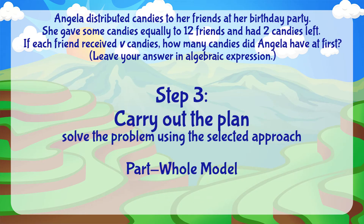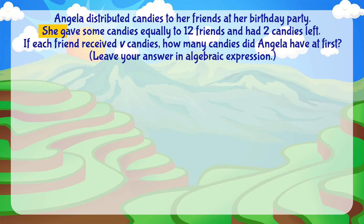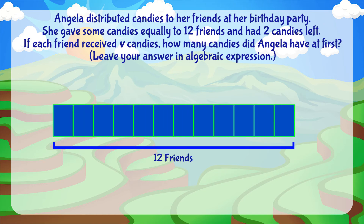Step No. 3: Carry Out the Plan — Solve the Problem Using Our Selected Approach. The Part-Whole Model: Angela gave the 12 friends the same amount of candies each. Let's use a rectangle to represent the amount of candies each friend received. We know that she had 12 friends, so let's represent the amount of candies given to the 12 friends with 12 rectangles of the same size. Each friend received V amount of candies, so let's label each rectangle as V.